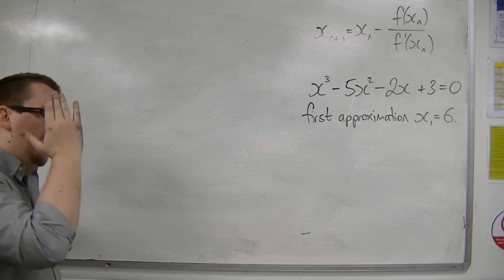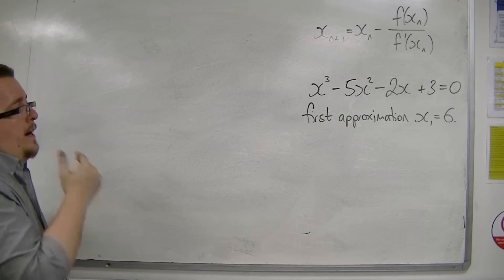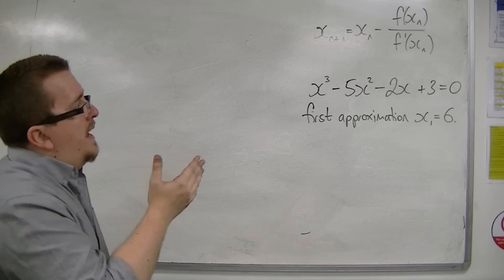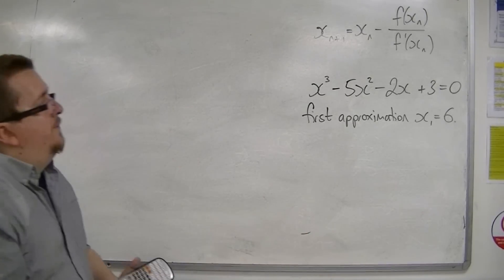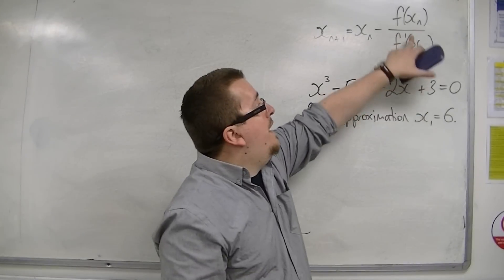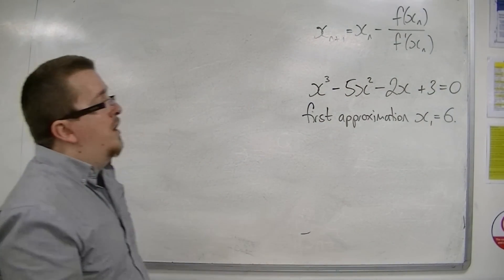So we need to have that initial number to work with to get our homing in on our route. So you can see what we need. We've got f of x and we've got f prime of x.